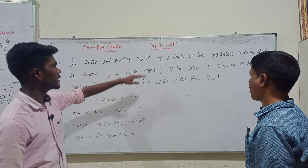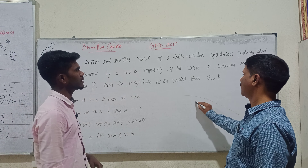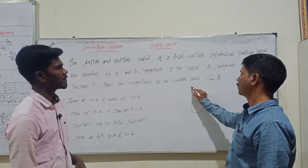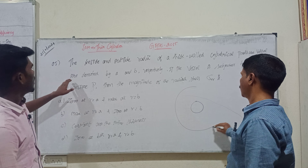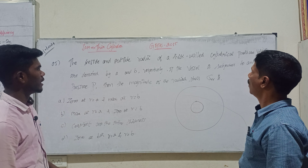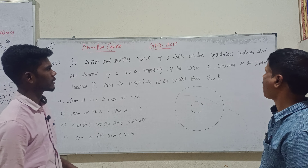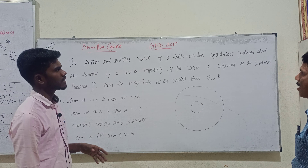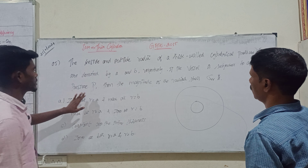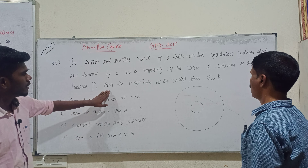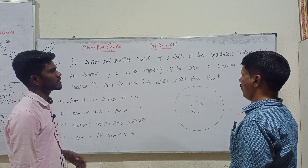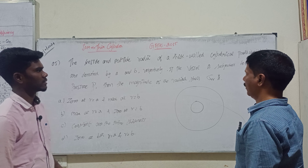The inside and outside radius of a thick-walled cylindrical pressure vessel are denoted by A and B respectively. If the vessel is subjected to an internal pressure, then the magnitude of the radial stress is...